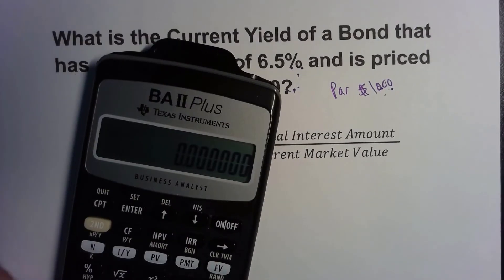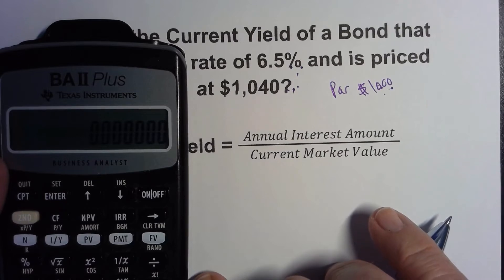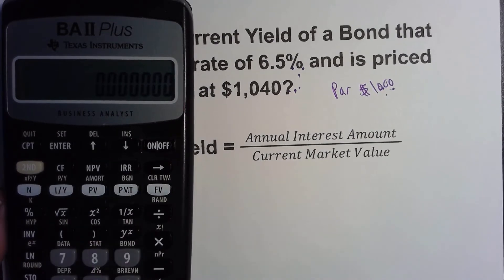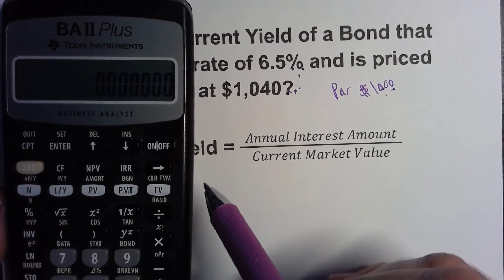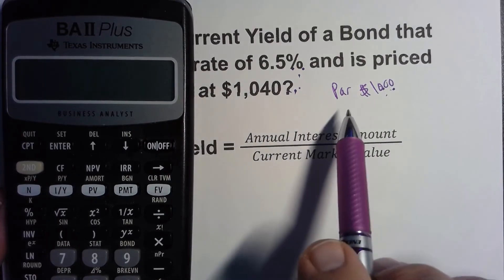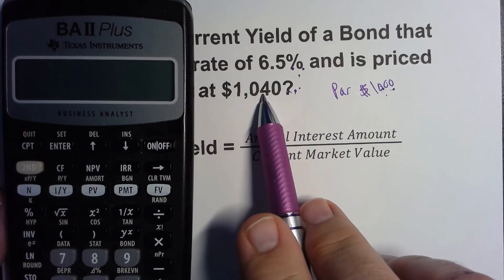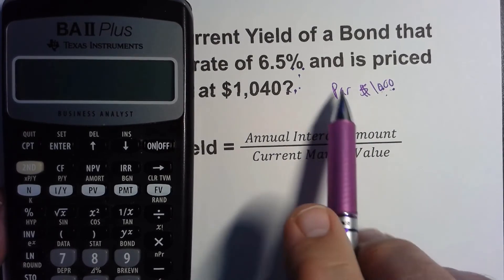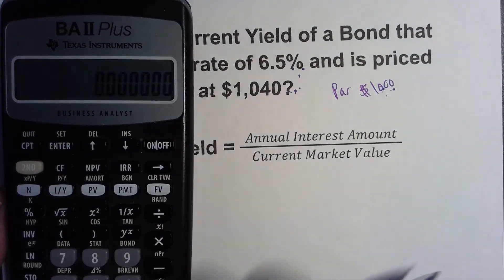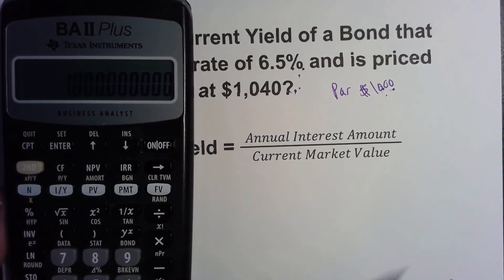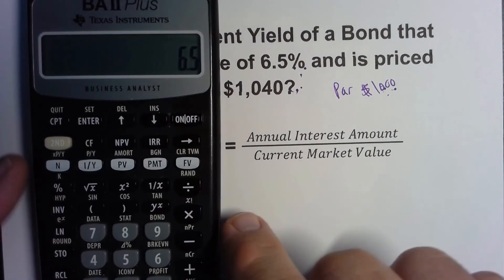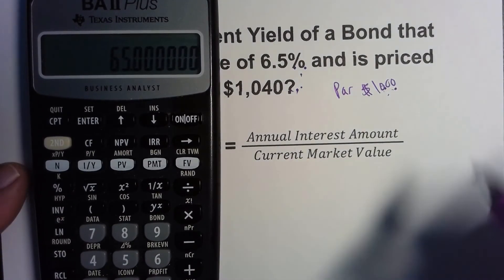I'm going to pull out my BA2 Plus calculator to show you how we do this — some of this you could do in your head, but I'll use the calculator to be safe. If you'd like one for yourself, I'll put a link in the description. We find the annual interest by multiplying the face value — not the price we're paying, but the actual par or face value — times the coupon rate. So face value times coupon rate gives us the annual interest amount. Our face value is $1,000 multiplied by 6.5%, which gives us $65.